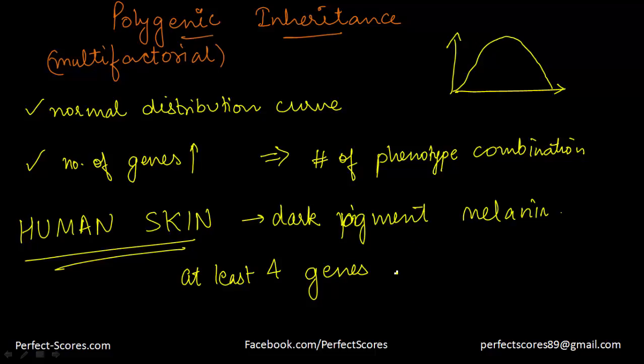And for each gene, one allele codes for the production of melanin. The other gene does not code for the production of melanin. And the combination of melanin-producing alleles, it determines the degree of pigmentation and that leads to continuous variation.